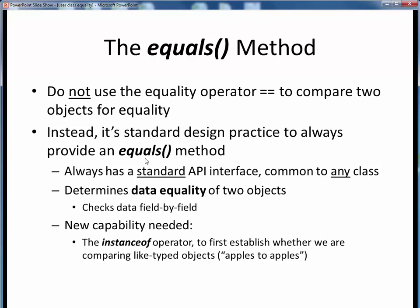A couple things of note about this equals method. First, it always has a standard API interface, which will be common to any Java class. Second, it determines the true data equality of two objects by checking their data field by field.